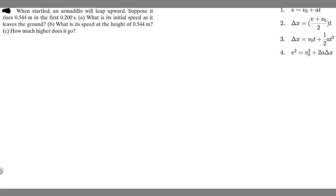In this problem, we're told: when startled, an armadillo will leap upward. Suppose it rises 0.544 meters in the first 0.2 seconds. Part A: what is its initial speed as it leaves the ground? Part B: what is its speed at the height of 0.544 meters? And Part C: how much higher does it go?